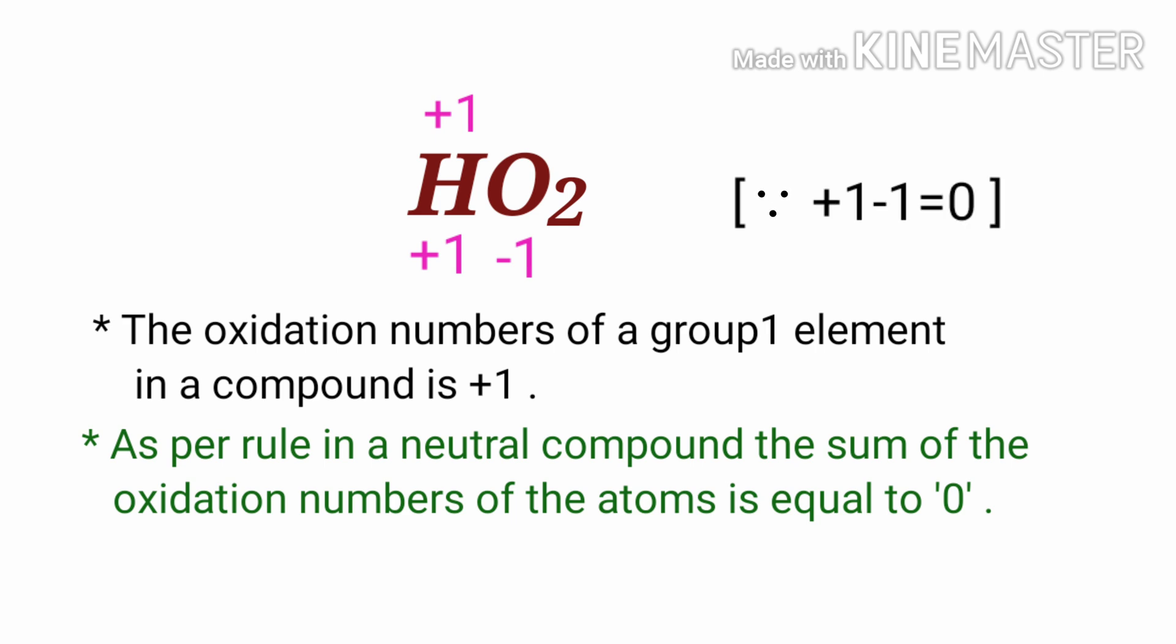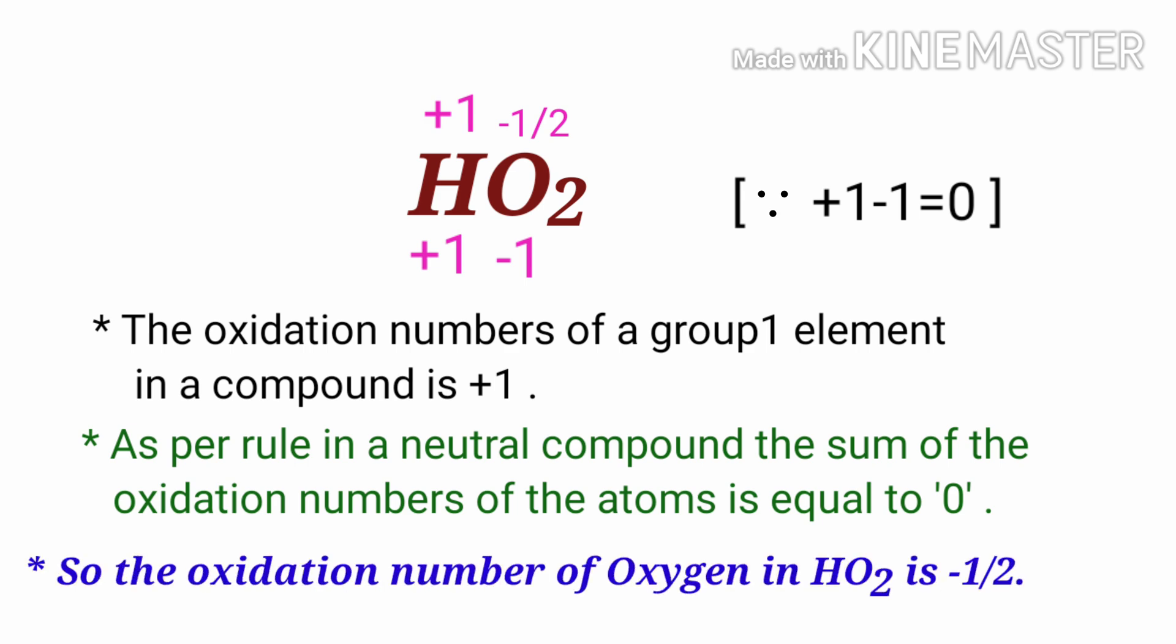In the O2 element, there are two oxygen atoms present. Therefore, we can write the oxidation number of the oxygen is minus one by two. So the oxidation number of oxygen in hydroperoxyl radical is minus one by two.